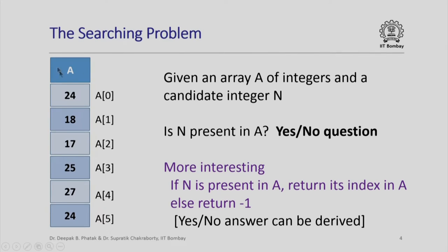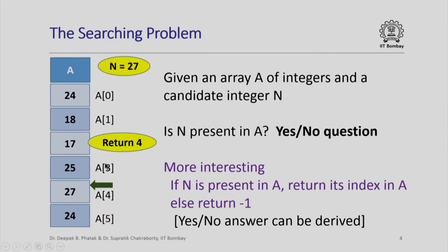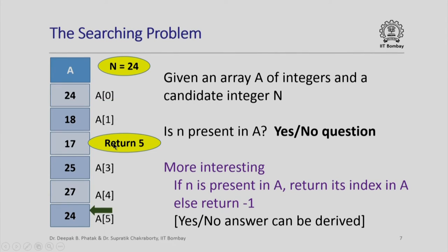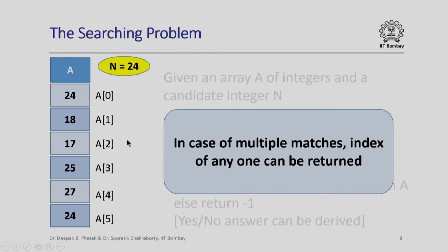Here is an example — an array a of integers with elements a[0] through a[5]. If I want to check whether 27 is present in this array, my searching technique should return 4, which is the index of 27 in this array. On the other hand, if I gave 23, which is not present, it should return minus 1. If I gave 24, note that there are 2 occurrences of 24 in this array, so it could return either 0 or 5.